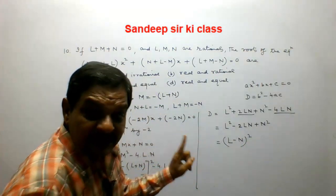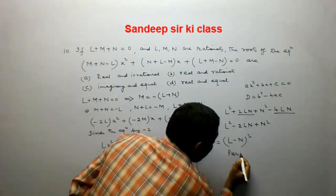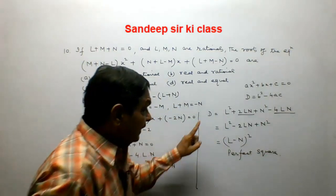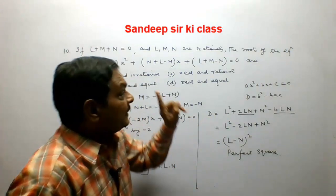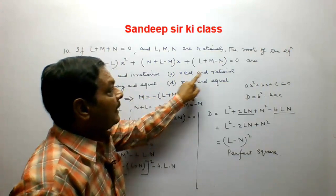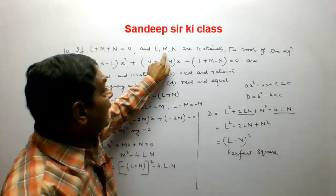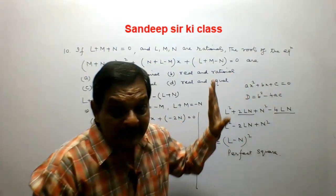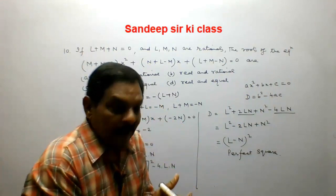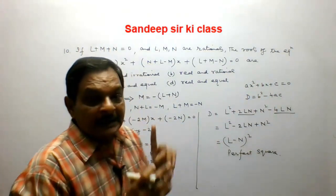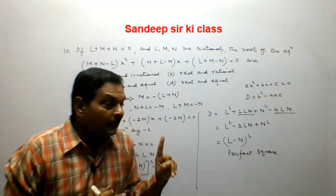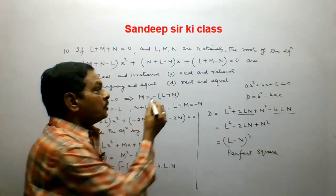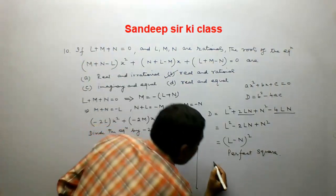Since the discriminant is a perfect square, and l, m, n are rational, the roots of the equation are real and rational. Option B is correct.